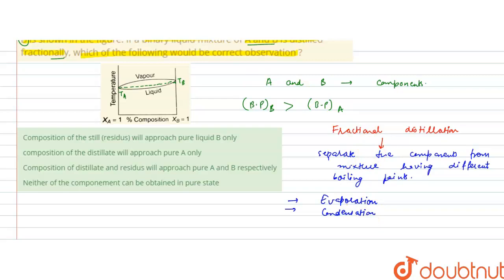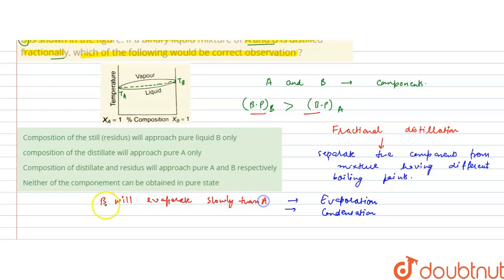So if we do the fractional distillation of components A and B — B has a higher boiling point than A. If B has a higher boiling point than A, it means B will evaporate more slowly than A. Since it has a higher boiling point, it will condense more easily and more fast. So if it condenses more fast, it means it will be obtained in the residue.